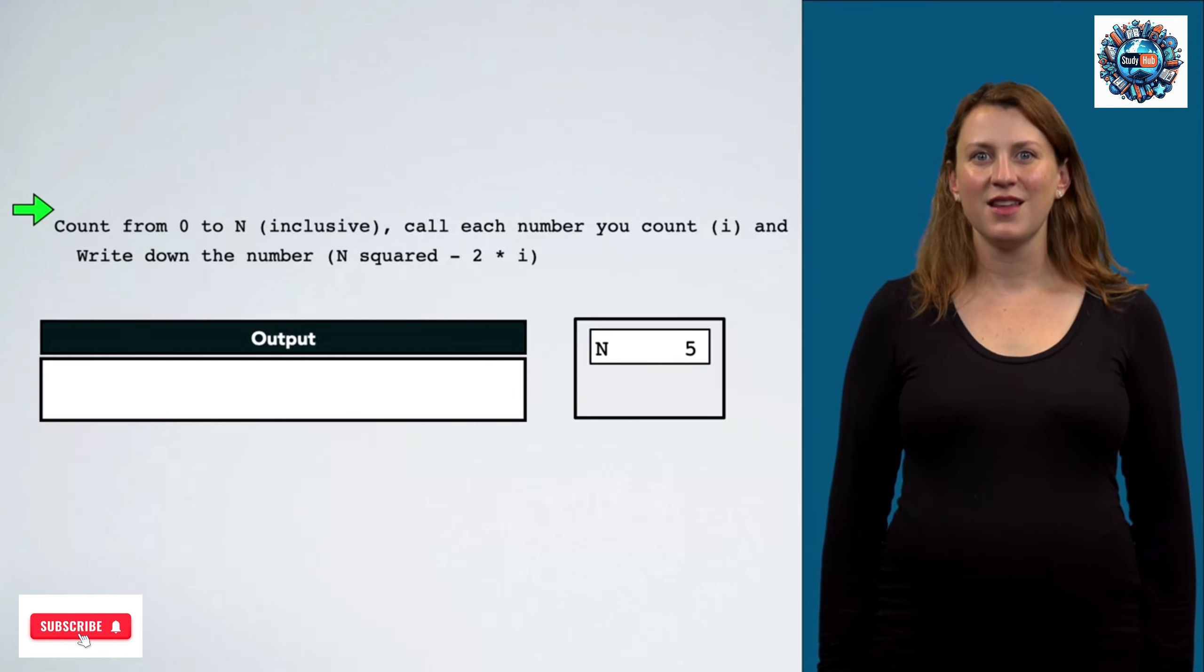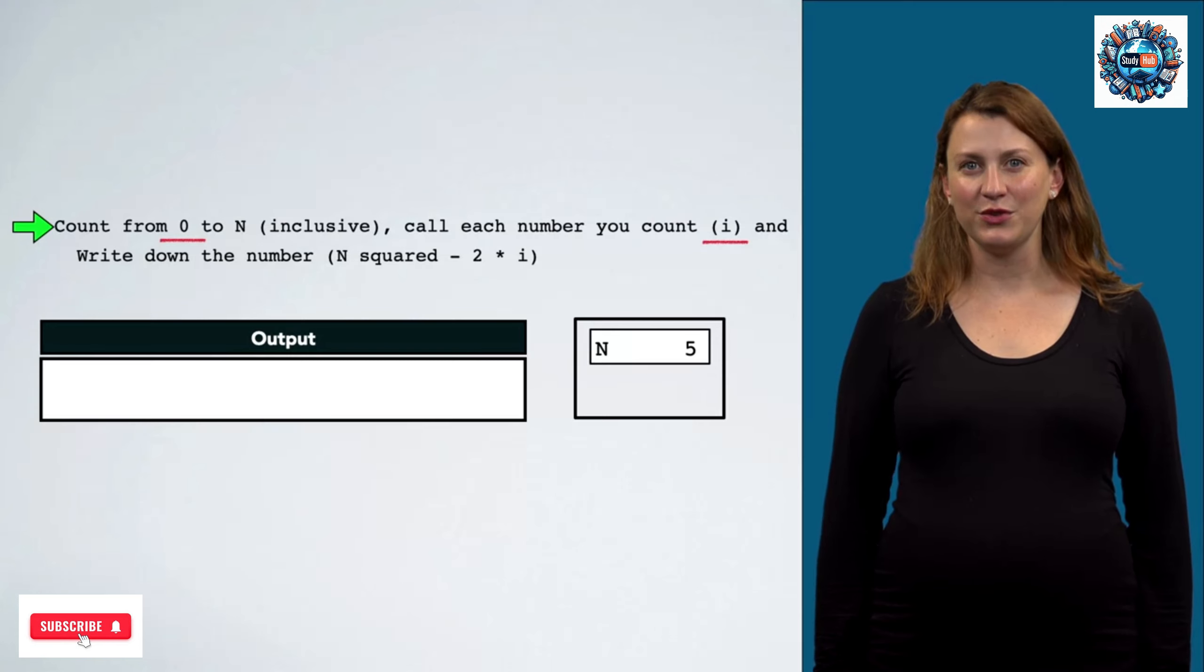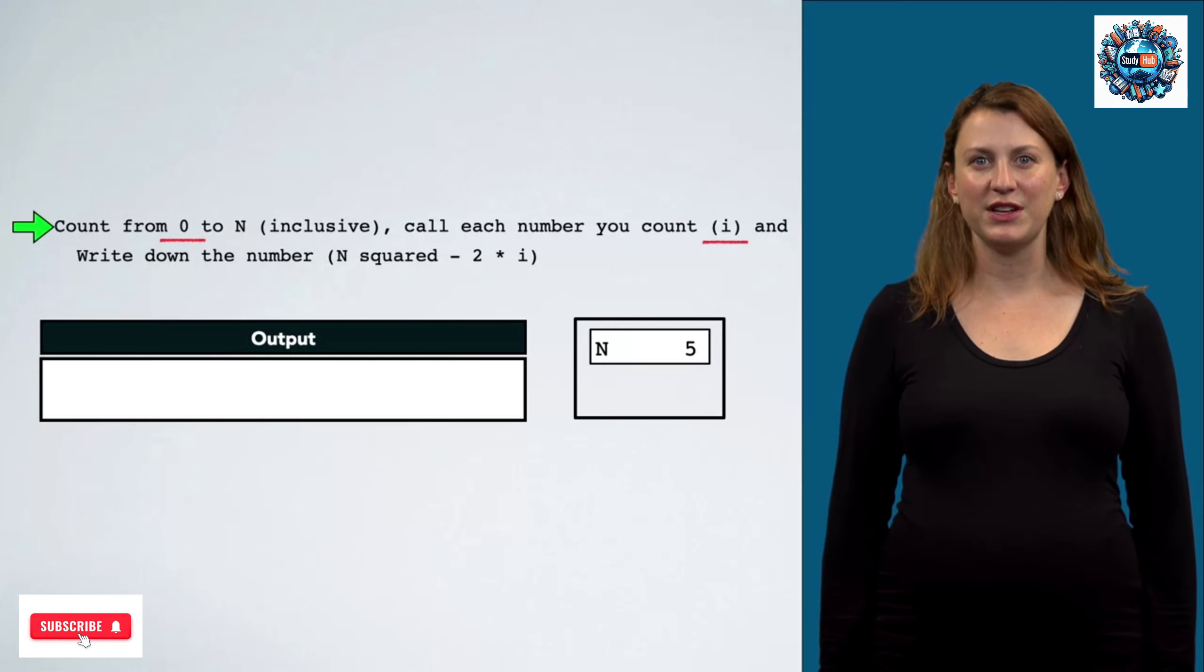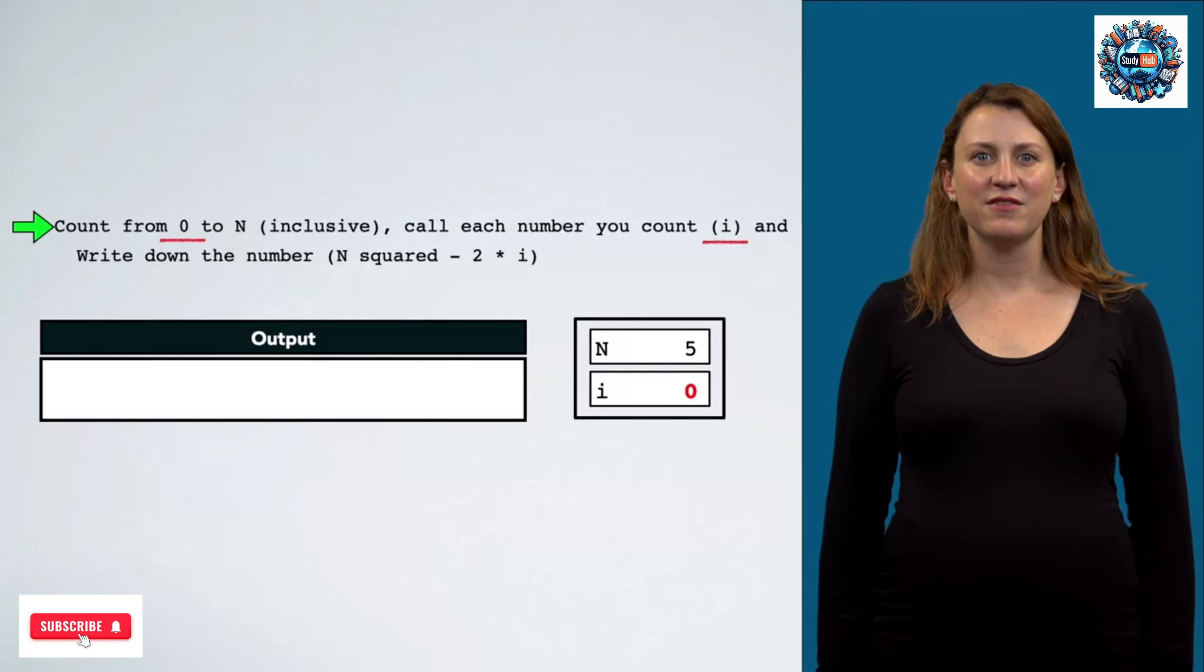Now we can start. The first thing we want to do is count from 0 to n, inclusive, and call each number that we're counting i. Since i is a variable, and it's going to start with the value 0, we create a box to hold i and its value of 0.